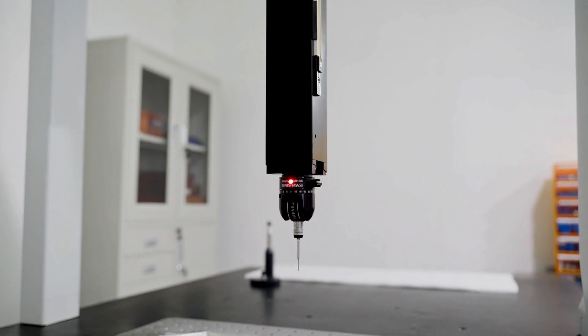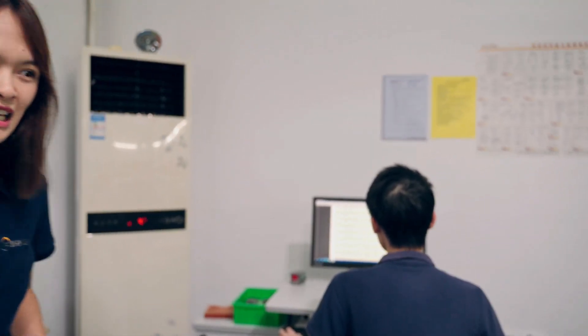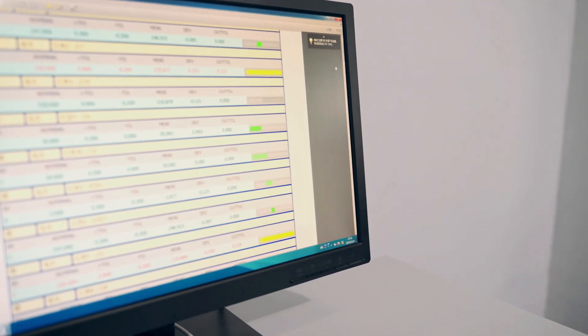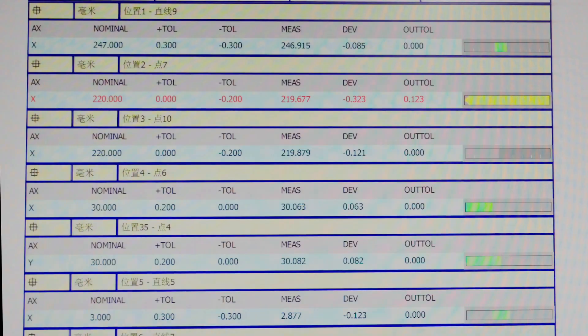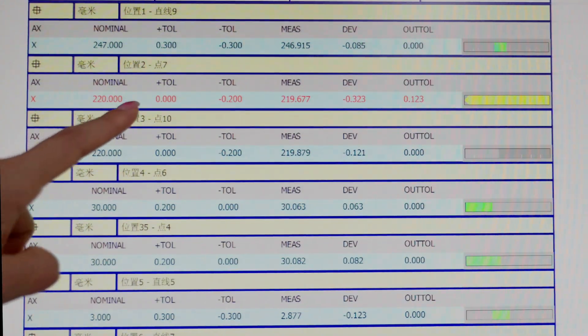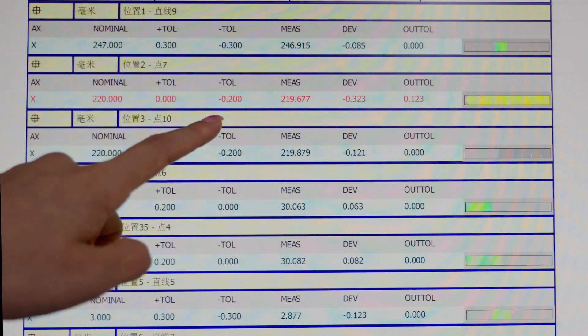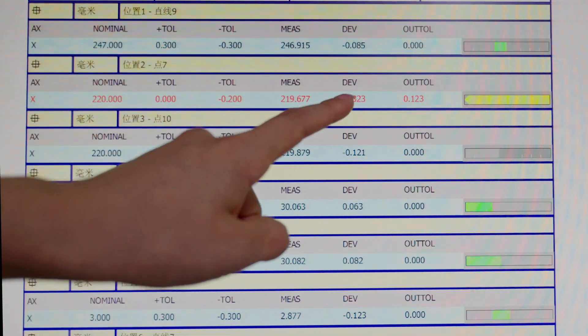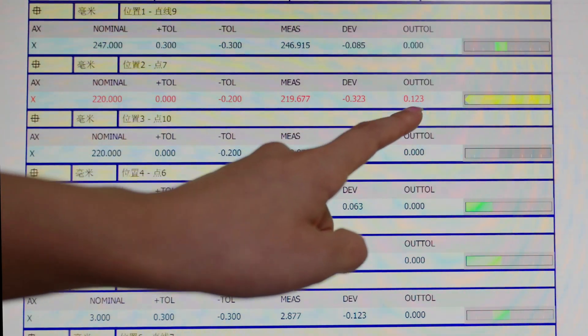After the part is checked, the system will produce a sheet with tolerancing that is in and tolerancing that is out. Here we have a sheet showing the inspection report with all of the results. Here we have the nominal, the tolerance, the measured result, the deviation, and the out toll.